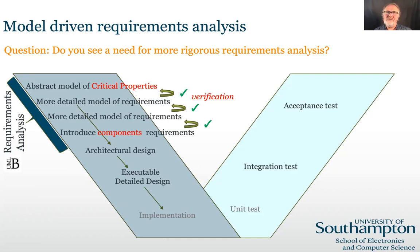Initially, we would even like to abstract away from some of the more detailed requirements so that we can focus on the critical properties of the system like safety and security. By abstracting away from the details, we can think clearly about these critical properties and make sure we model them correctly. Then we can add the details incrementally in refinements, verifying at each step that we have not violated the previous more abstract models. In doing so, we will begin to introduce the components involved in the system and their requirements, hence moving towards an architectural design.